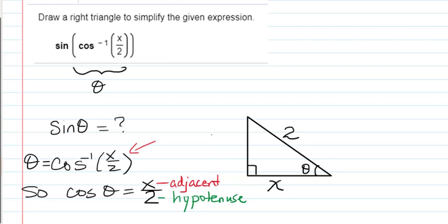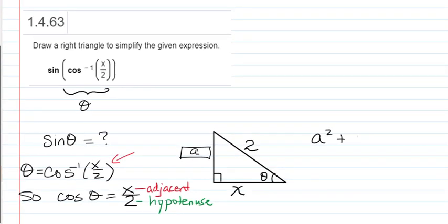And we're still missing the opposite side here. But of course, we can use the Pythagorean theorem to find it. Let's call this side A. We know that A squared plus x squared equals 2 squared.